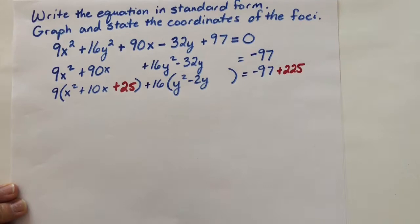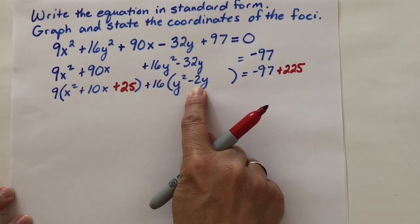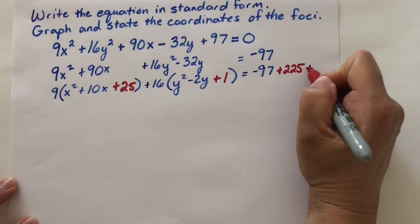Now, for this term right here, we need to take half of negative 2. That's negative 1. Negative 1 squared is positive 1. So we need a 1 here. But that's not really a 1. That's a 1 being multiplied by 16. So we have just added 16 to the left-hand side. So we need to add 16 to the right-hand side as well.